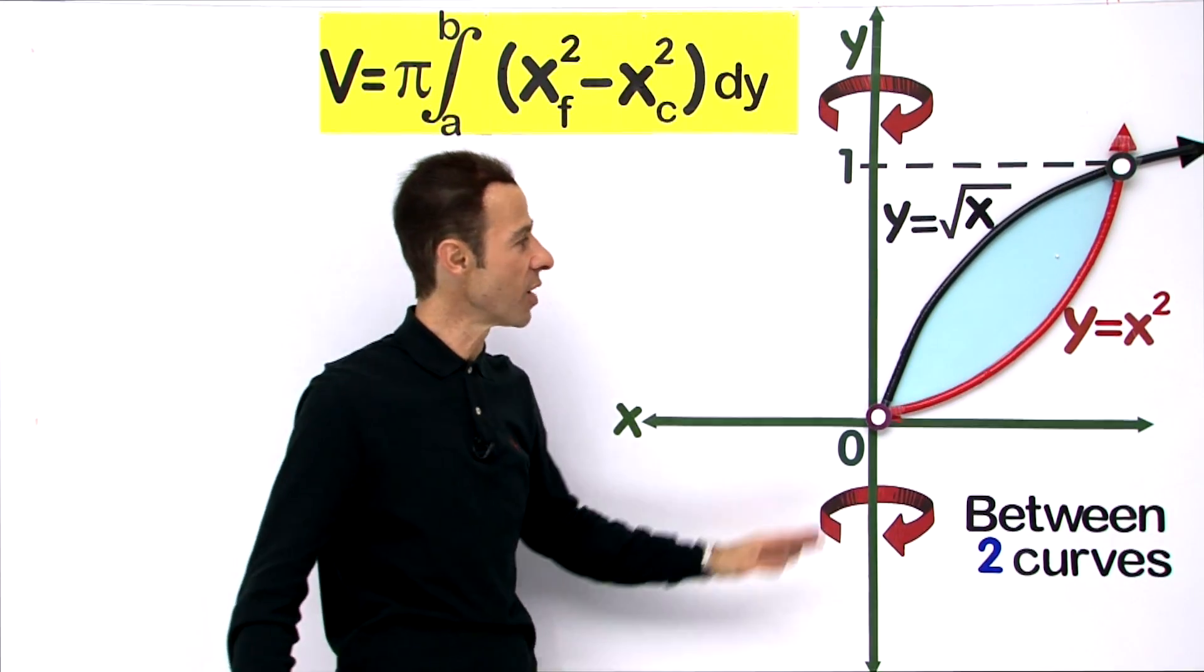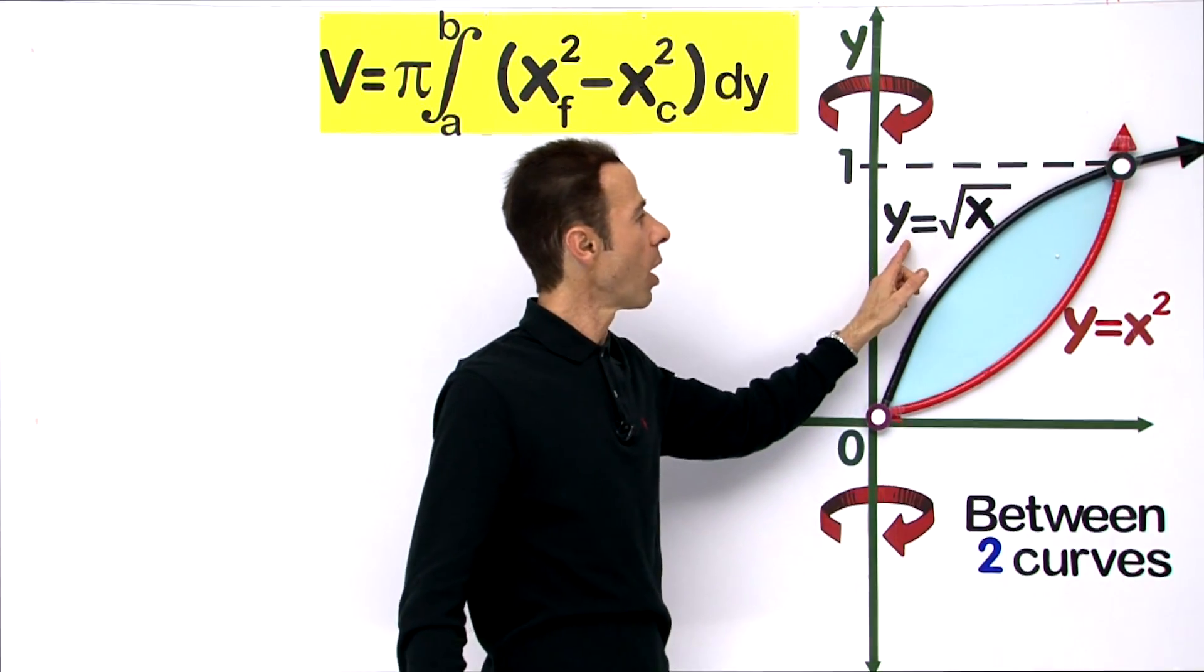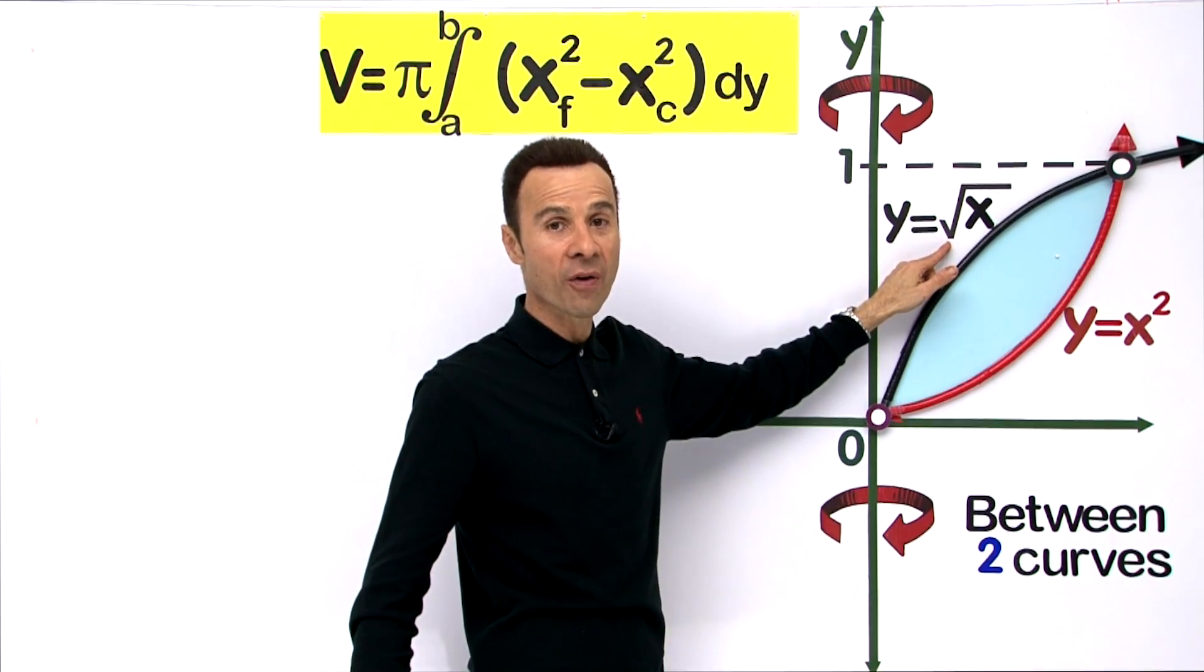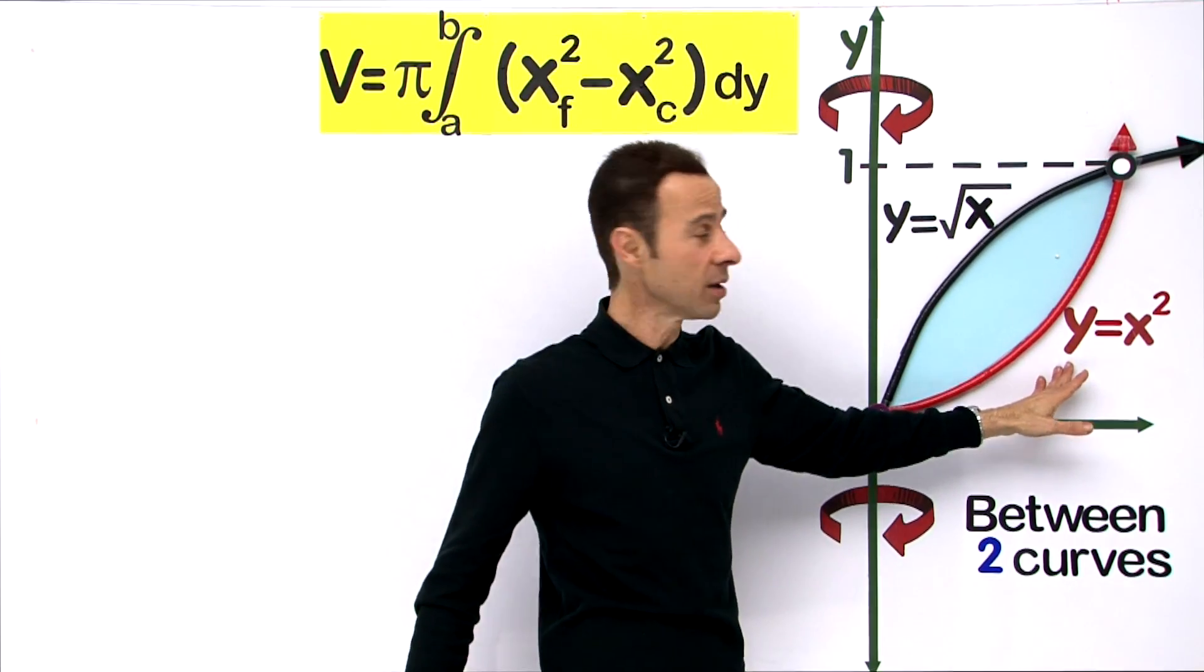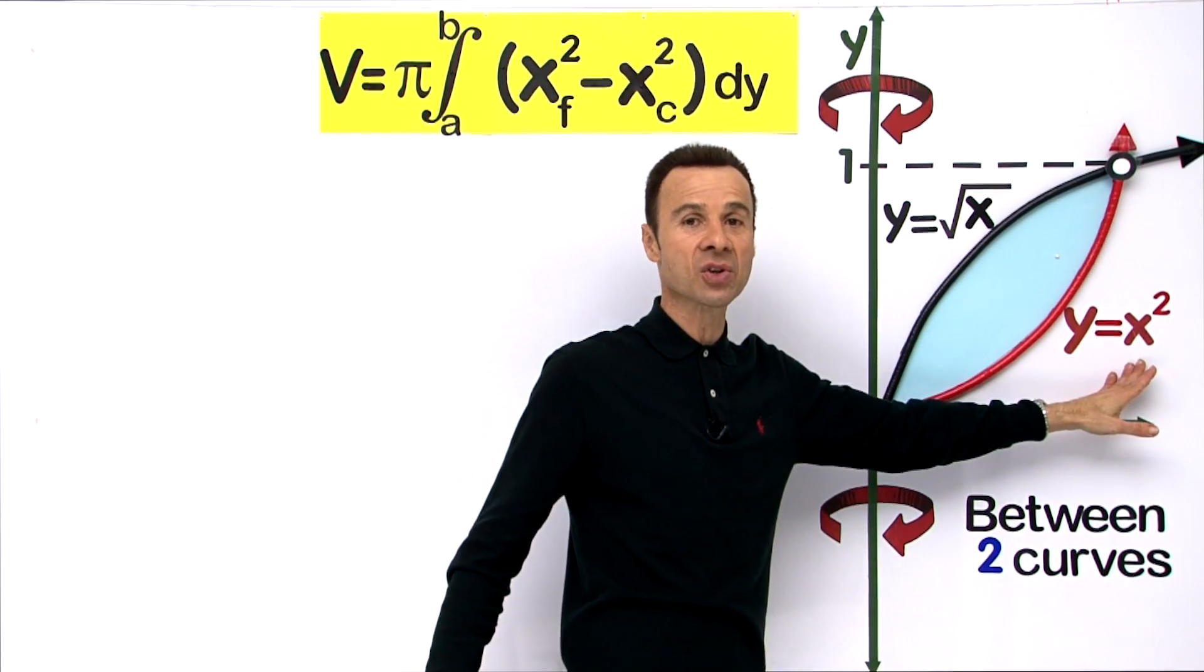Let us have a closer look at those two curves. The first one in black is y equals the square root of x, and on the right in red is a half parabola, y equals x squared.